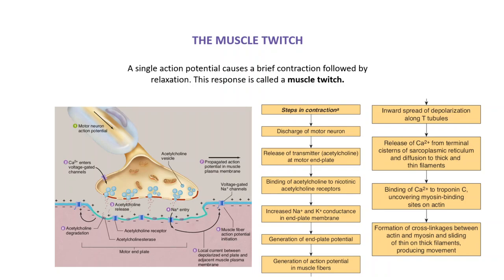A muscle — particularly the skeletal muscle — gets contracted upon receiving a signal from the motor neuron, so the motor neuron is responsible for the contraction. At the neuromuscular junction, the motor neuron releases acetylcholine, and this acetylcholine binds to receptors on the motor plate.